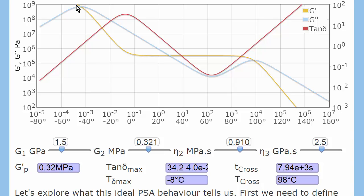say 1.5 gigapascals. They don't change much between PSAs, so we'll leave that as a constant. At more normal temperatures and normal speeds,